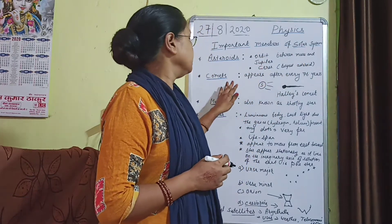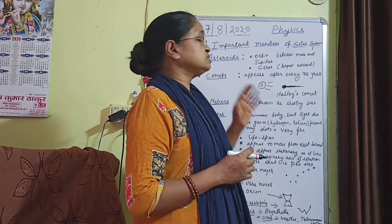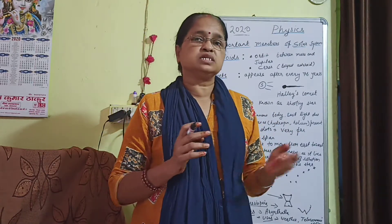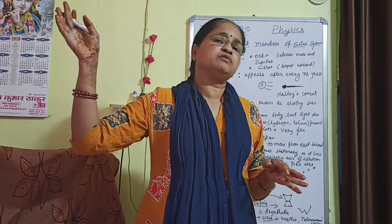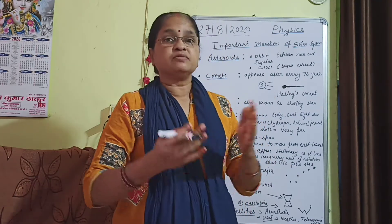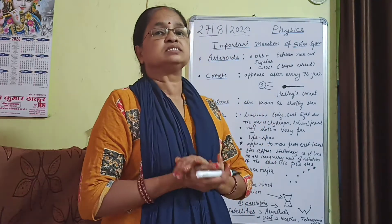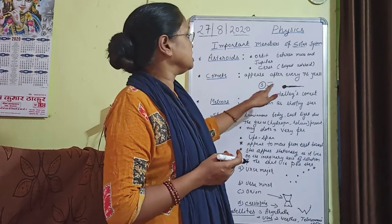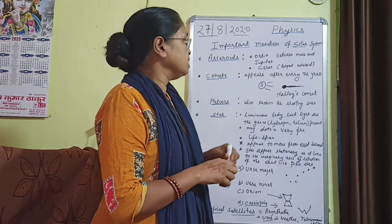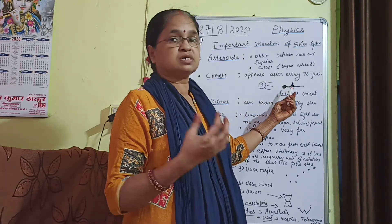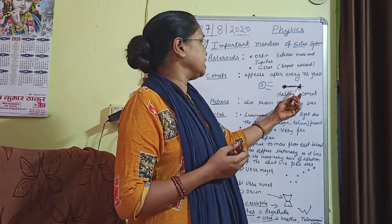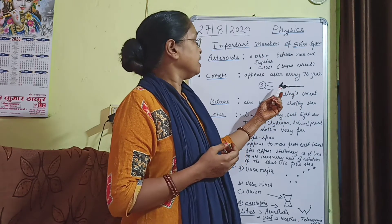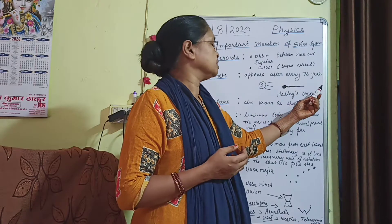Next we come to comets. A comet is a celestial body which revolves around the sun, and its distance is very far away from the sun. After 76 years, it comes near to the sun, and when it does, the gases, smoke, and dust start melting and it appears to have a head with a tail coming out.